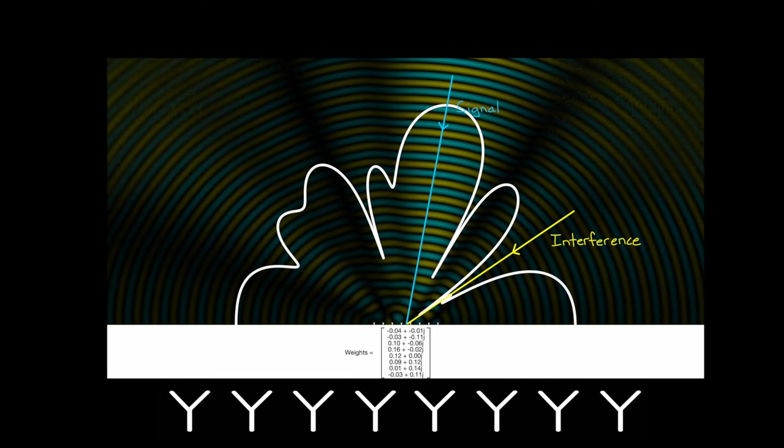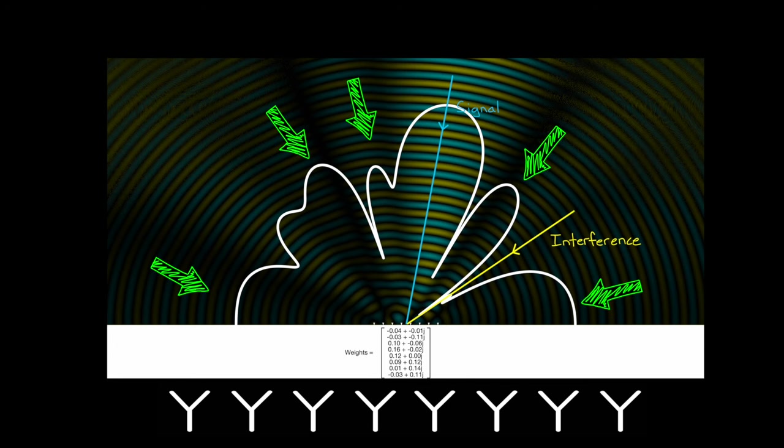And as expected, there's a really deep null right at the interference. Now there is more gain in these other directions, but again, we don't care about that since there is no power coming in from that way.